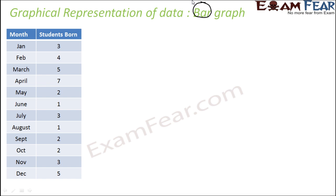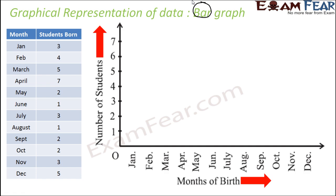For example, let us take data for students born in particular months. In January, three students were born; February, four; March, five; April, six; May, two; and similarly through December, five students. We want to represent this in graph form.